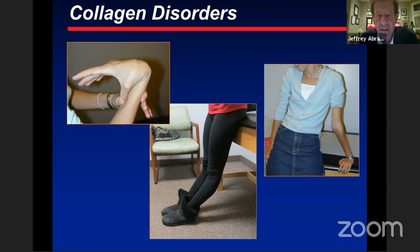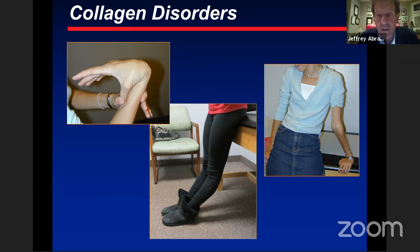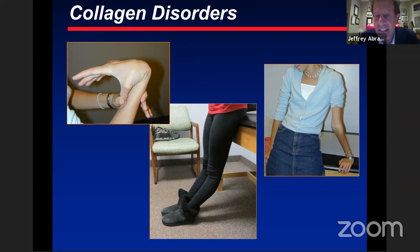Beware, however, there are collagen disorders like Ehlers-Danlos that can give people very loose joints. If they're asymptomatic, you could call it multidirectional laxity. But surgical results of soft tissue procedures on patients with Ehlers-Danlos would be horrific. This is not an entity you really want to offer surgical procedures to, because of the high risk of failure.